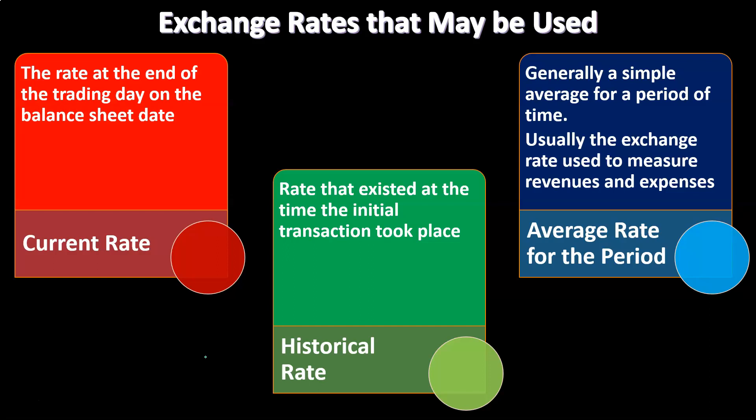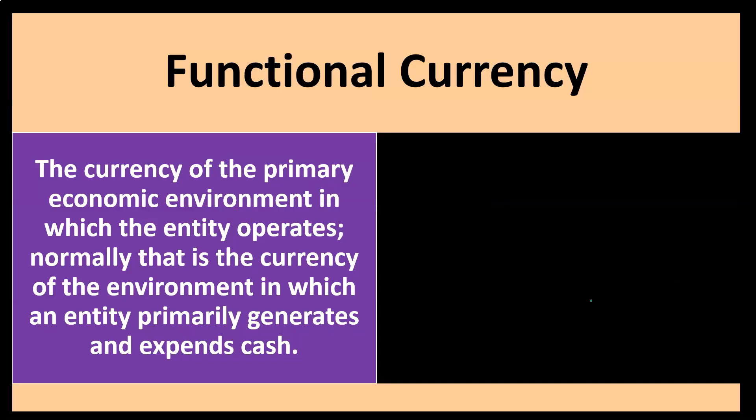And then we have the average rate for the period — generally a simple average for a period of time — which is usually the exchange rate used to measure revenues and expenses. The average rate would be the one we'd think of for the income statement, which has a beginning and an end. We can't really choose one rate at any point in time to reflect the entire period, so maybe it makes sense to use some kind of average that best represents the full year. For a very large, material transaction on the income statement, you might use the historical rate, but in general you would use an average rate for the income statement.